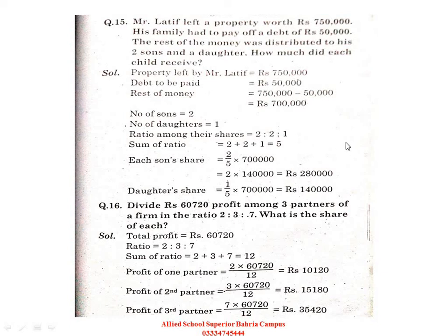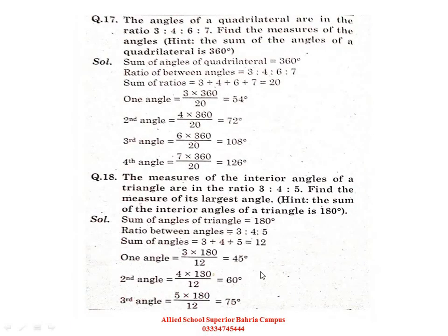Divide 60,720 profit among 3 partners of a firm in the ratio of 2:3:7. What is the share of each? Total profit given; sum of the ratio: 2+3+7 = 12. We find each one by one. First partner: 2/12 × total amount. Second partner: 3/12 × total amount. Complete it this way students.